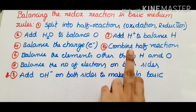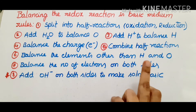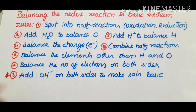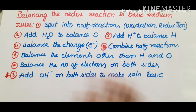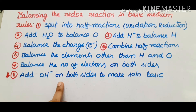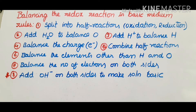Balance H2O and H+, then do charge balance. Combine the overall reaction — other than hydrogen and oxygen, balance those atoms first. Next step is to balance the number of electrons on both sides so that both sides have equal electrons. Then, finally, the important step in basic medium is to add OH- ions on both sides to make the solution basic.